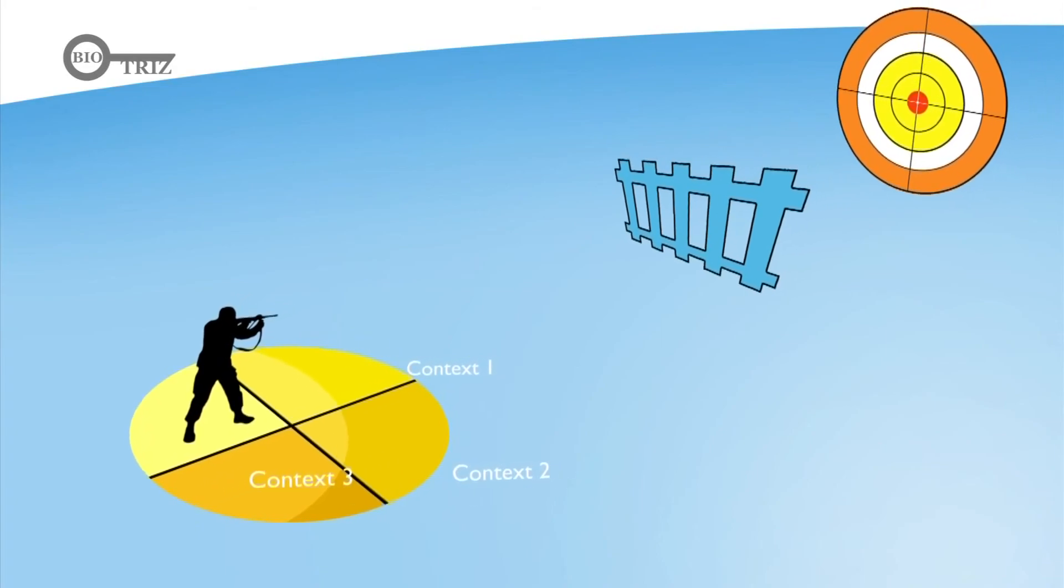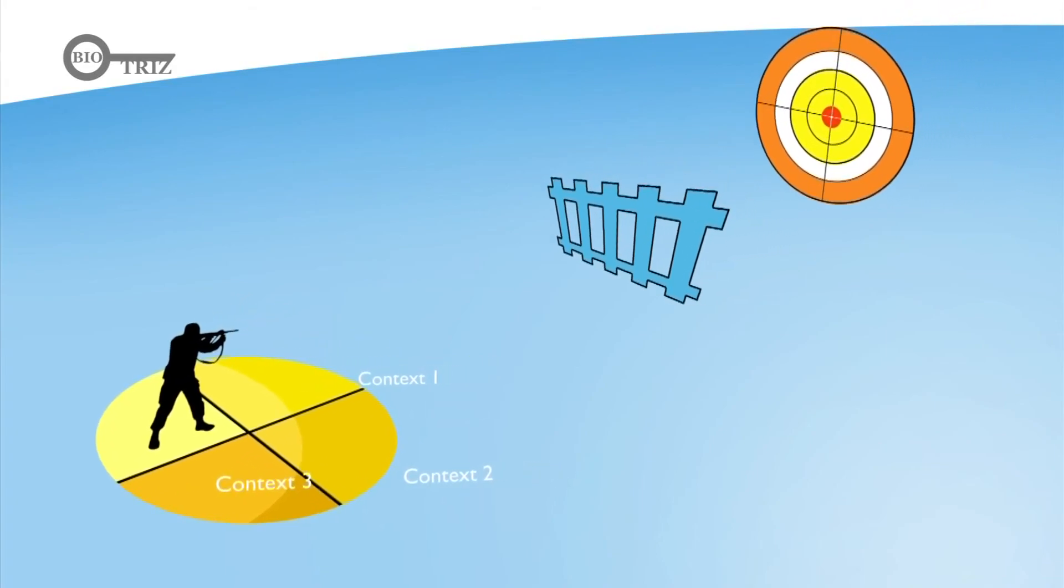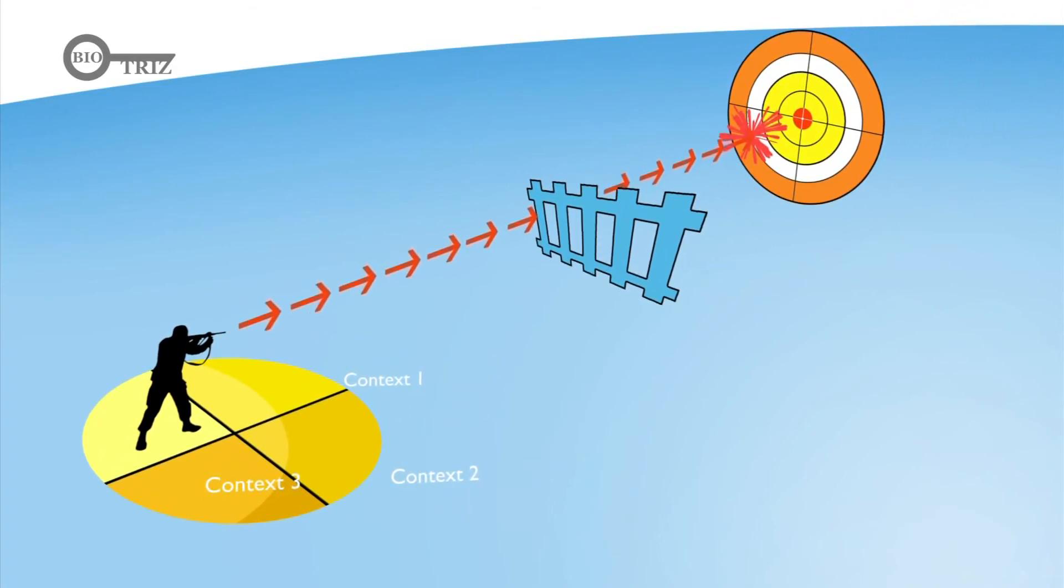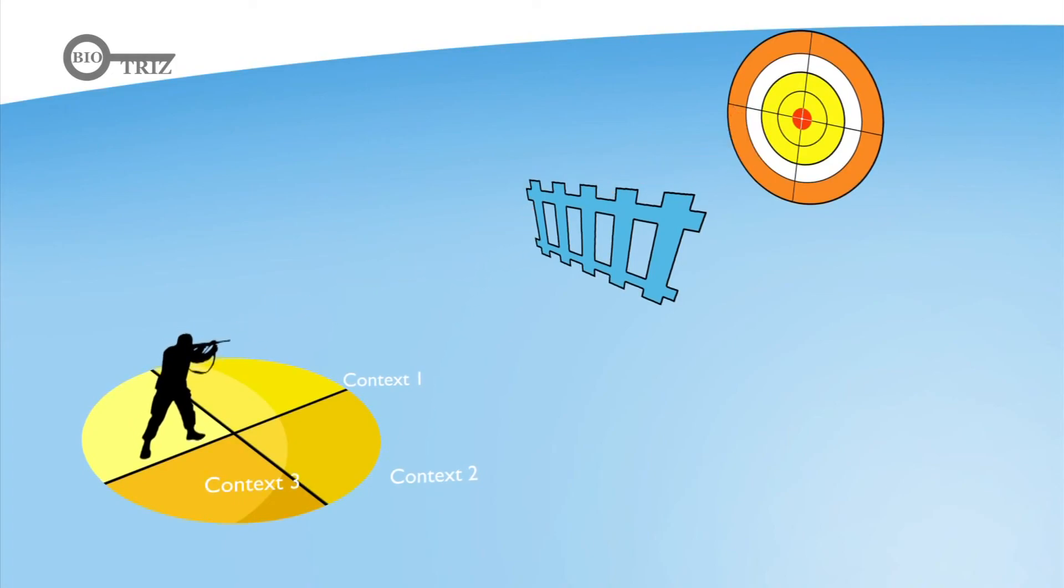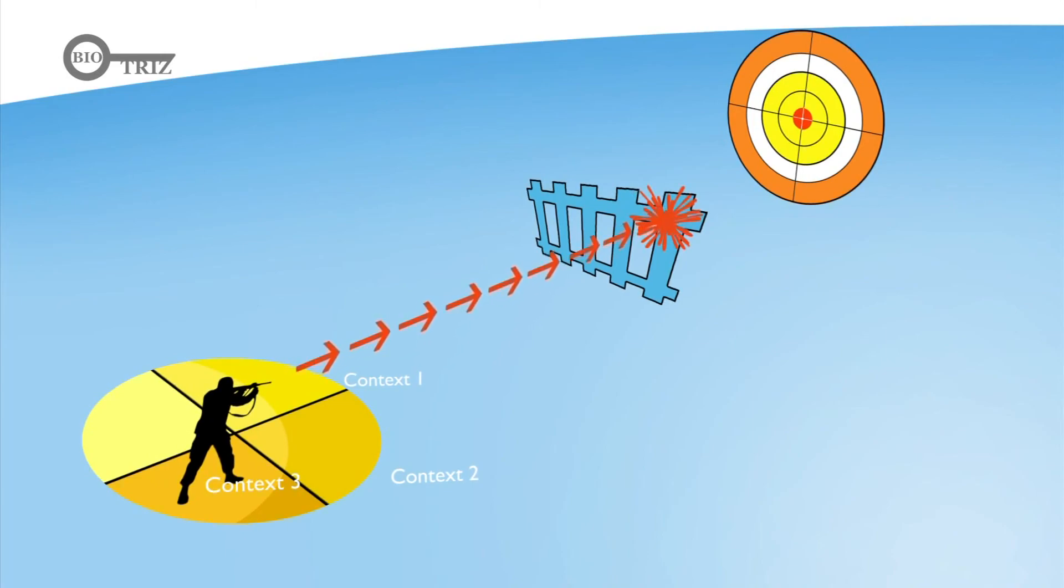Depending on the context, we have different views on the ideal final result. In some contexts, we hit the target, but it is not necessarily the bullseye. And in some contexts, we hit an obstacle.